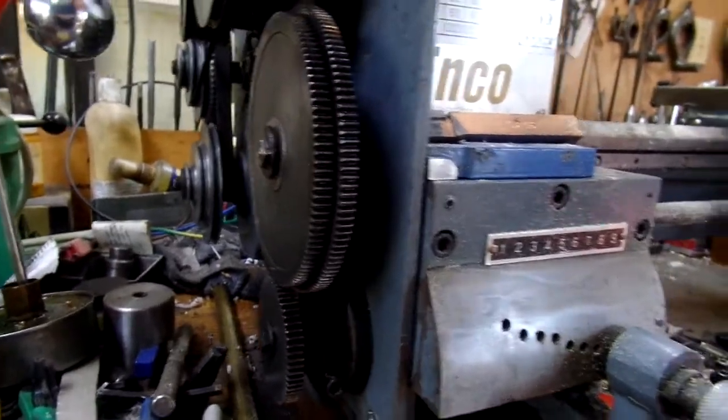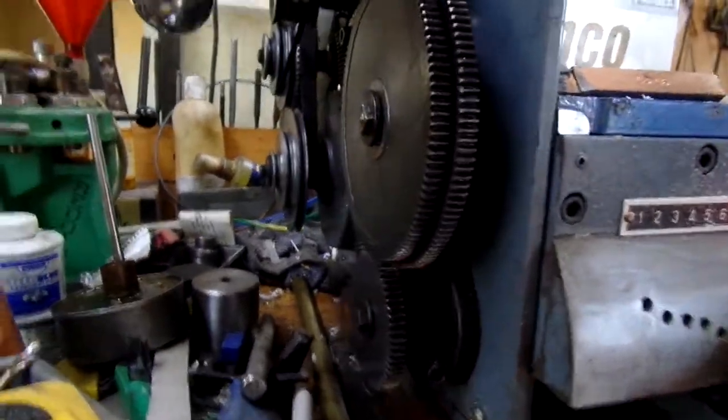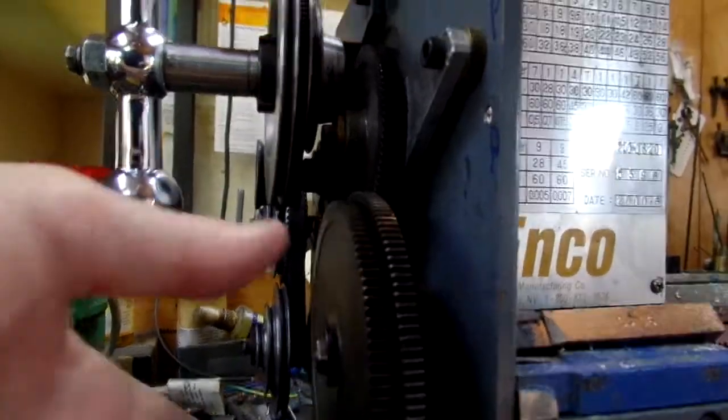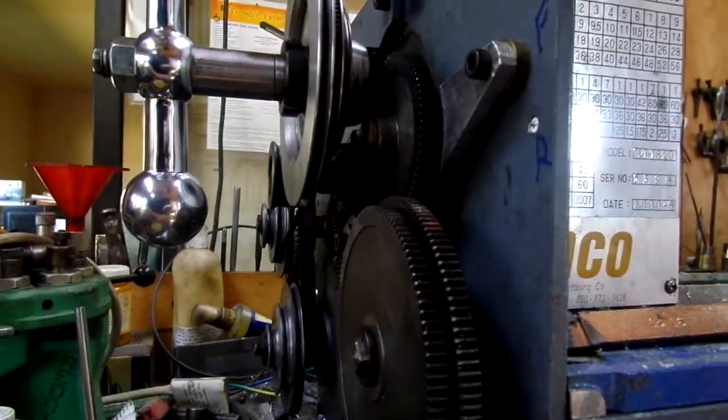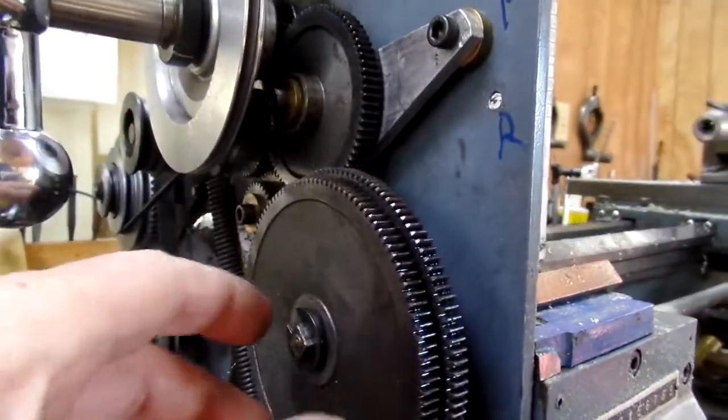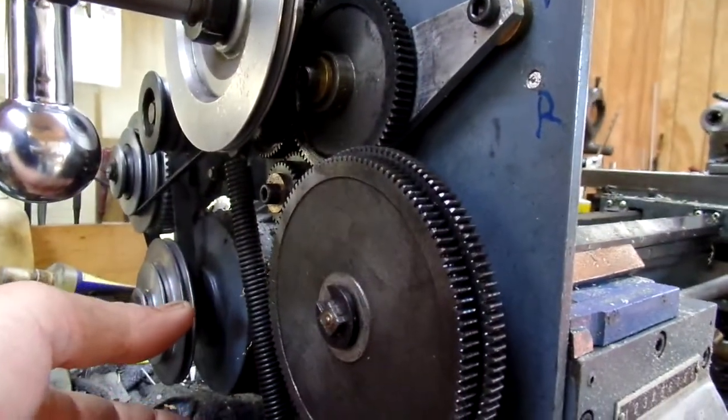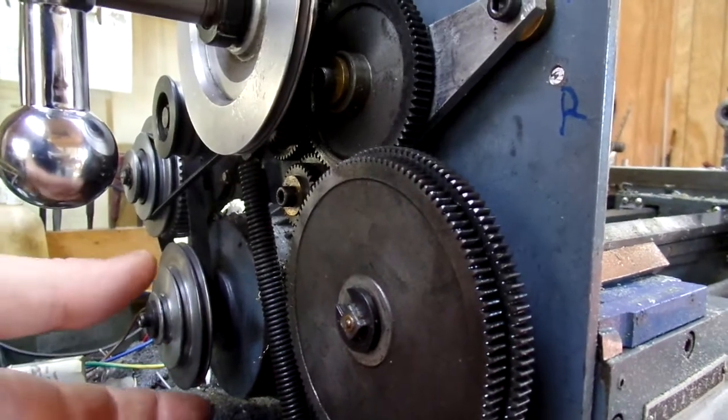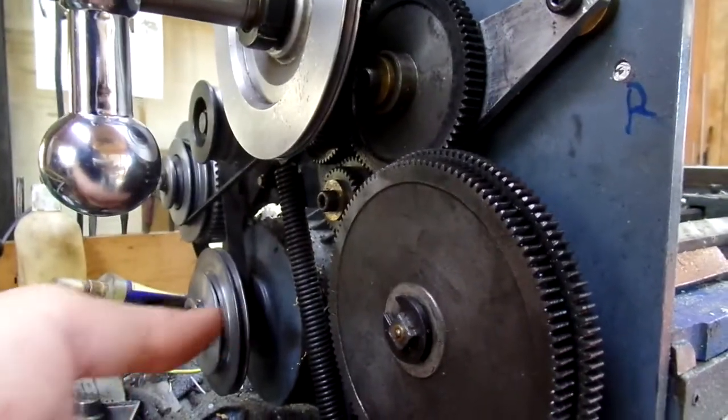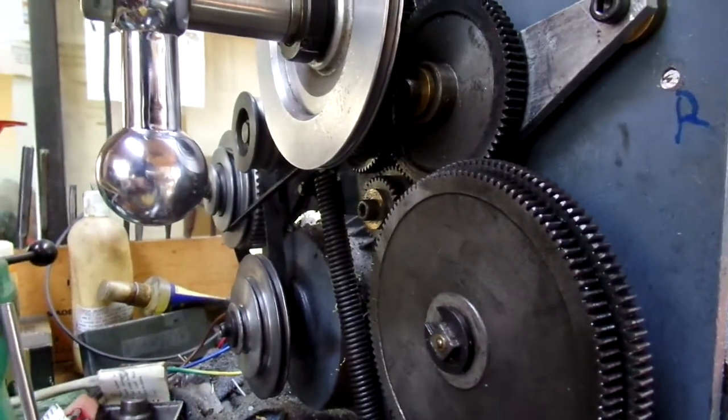I was looking for an Allen, there's I believe a 6 millimeter Allen there, and that'll allow the banjo to swing out of the way. The books that I've seen have the banjo on the back side, which is not really the back side but it's more out of the way there. I just never liked it there.